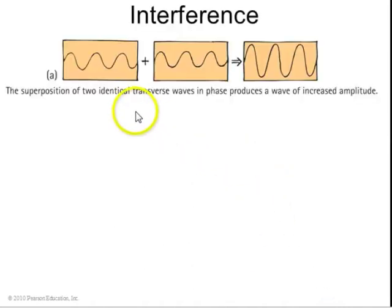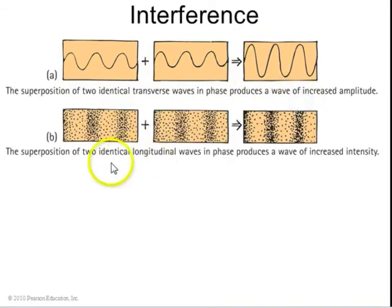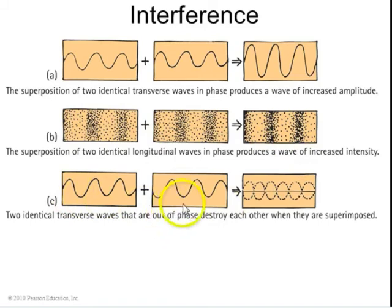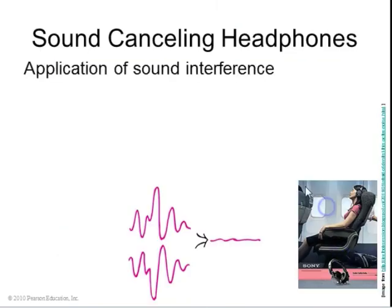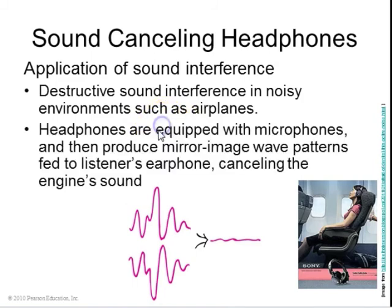So interference. If you have two waves that are in phase, they produce a wave that has an increased amplitude. This is true for longitudinal waves as well. These two waves are in phase, so the compressions match the compressions, and rarefactions match the rarefactions, then you get a wave of increased intensity. However, if waves are out of phase, they'll cancel each other out, and you can just get a zero amplitude wave. This is true as well with longitudinal waves. If the compressions match the rarefaction in this wave, they can cancel each other out and get zero sound. There's something called sound-canceling headphones that actually have microphones inside the headphones that listen to the surrounding sound and produce mirror image wave patterns that are fed into your ear so that it cancels the sound out. So you can be in a noisy airplane and get some peace and quiet.